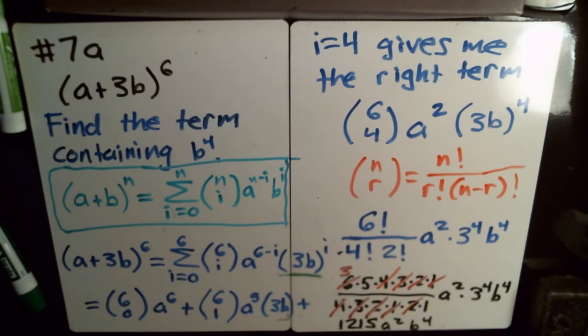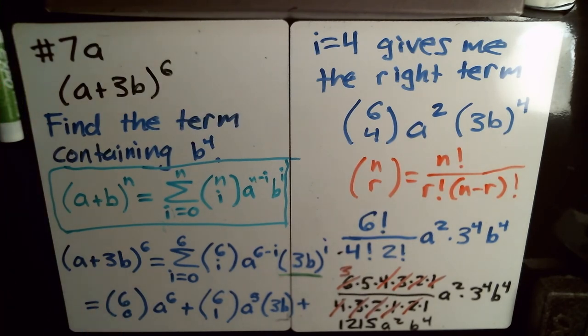So this would be the term in the expanded polynomial, the only one that has b to the 4th in it. So it's a little bit easier to use binomial theorem if you're looking for a particular term. Then you don't have to do all of the terms, expanding it out to get your answer. You just have to kind of simplify the one that you want. And you don't have to waste a bunch of time finding terms that you don't care about, as you would have to do using Pascal's Triangle.